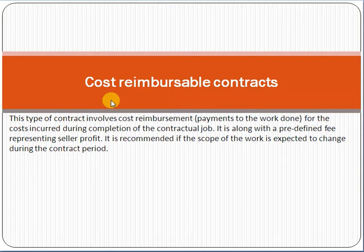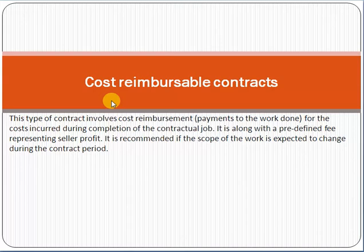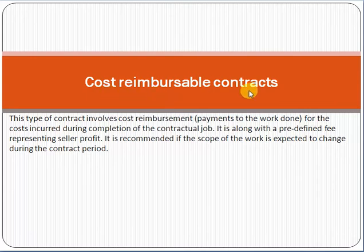For example, if building the flyover costs thirty thousand dollars, you will receive thirty thousand dollars plus an additional fee of, say, five thousand dollars — making it thirty-five thousand dollars total. So in a cost reimbursable contract, whatever cost the seller spends will be reimbursed by the buyer, plus an additional fee on top.